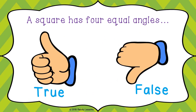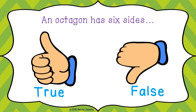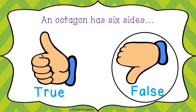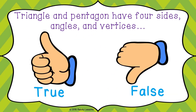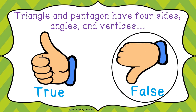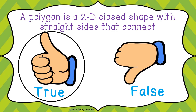A square has four equal angles. The answer is true. An octagon has six sides — is it true or false? It is a false statement. An octagon has eight sides. Triangle and pentagon have four sides, angles, and vertices — the answer is false, because triangle and pentagon have different numbers of sides. A polygon is a 2D closed shape with straight sides that connect — that is true.